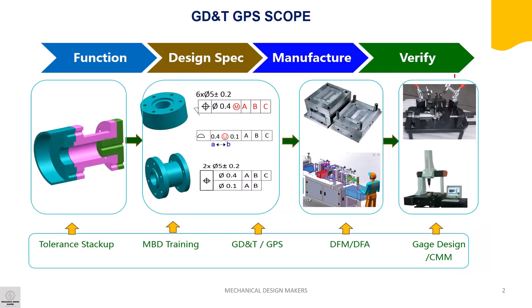After knowing the function, a tolerance stack-up will be performed to determine geometrical tolerance. Those tolerances will be applied on engineering drawings for manufacturing, considering design for manufacturing or design for assembly. Then the produced parts will be verified by gauge design or CMM machine.